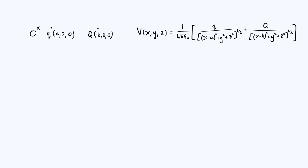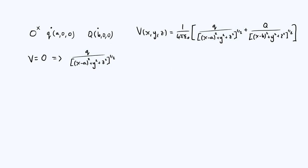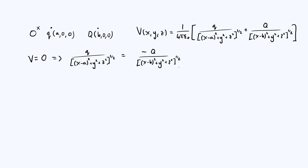An equipotential surface is found by setting V equal to a constant, which in general gives a complicated expression. However, things simplify nicely if we consider specifically the surface of zero potential. Setting V = 0 means the bracketed term equals zero, so the lowercase q term equals the negative of the capital Q term. After putting the charges on the same side and squaring everything to remove the square roots, we get: q²/Q² = ((x−A)² + y² + z²) / ((x−B)² + y² + z²).